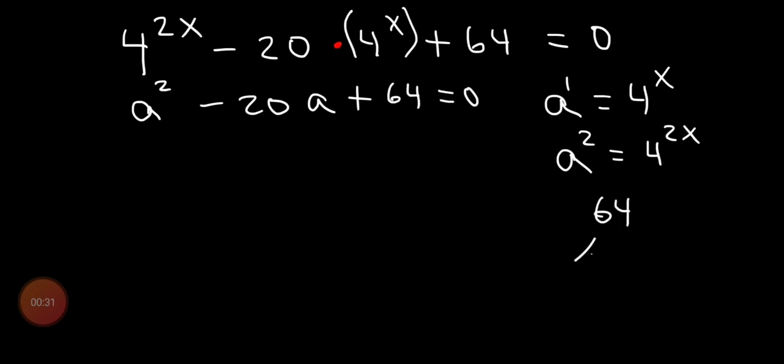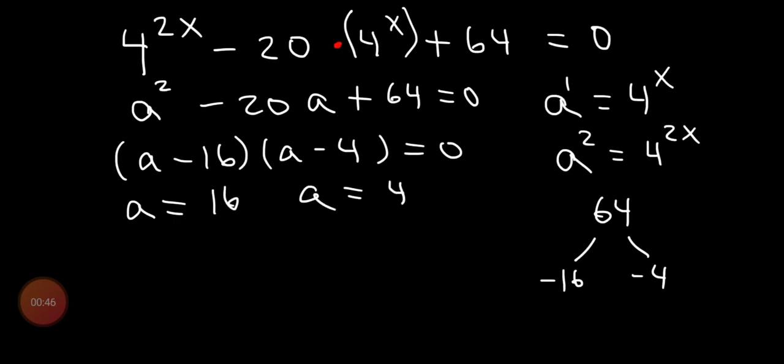We have to change it with variable a and now it is a quadratic equation in standard form. For this one, we are going to start factorization, and the suitable pair which we have taken is 16 and 4 with same sign. It is equal to negative 20 and in product is equal to 64.